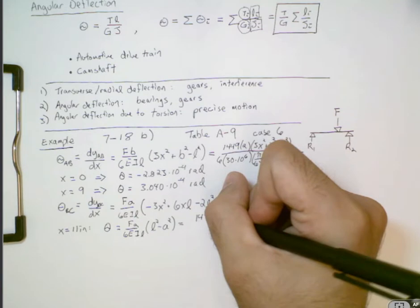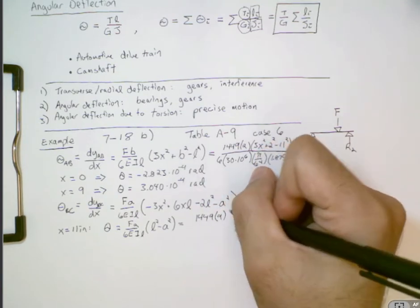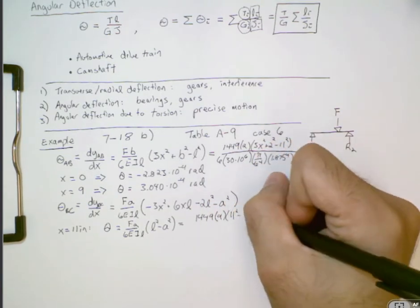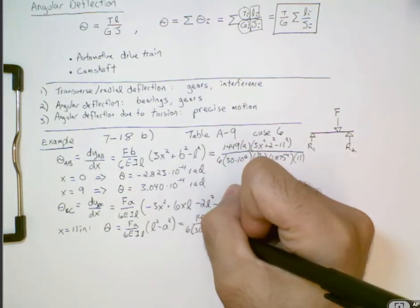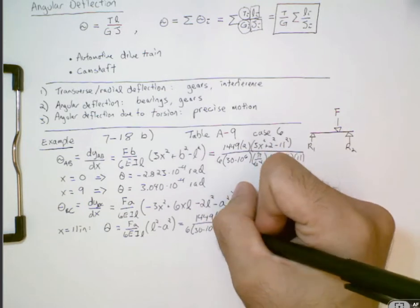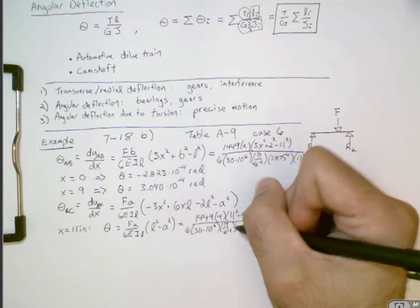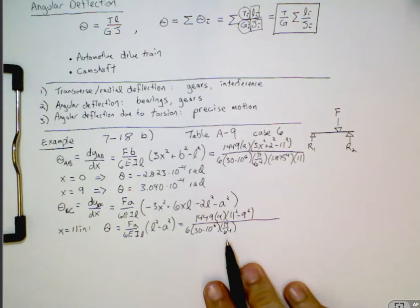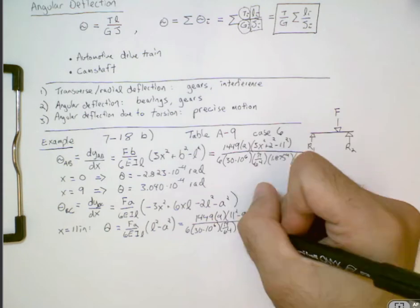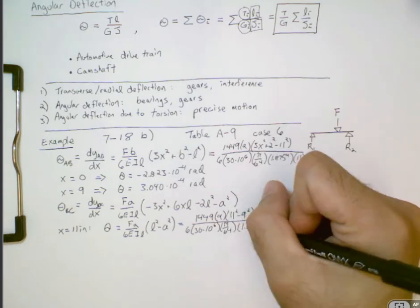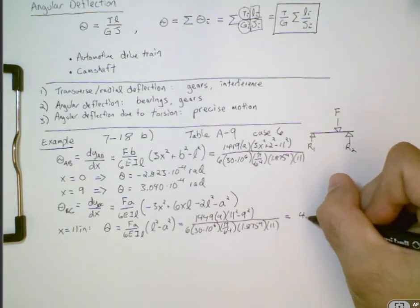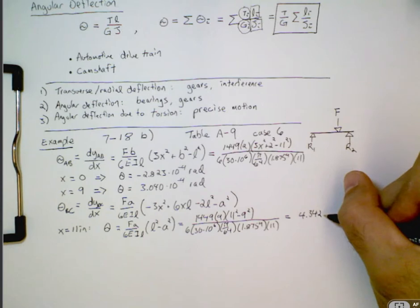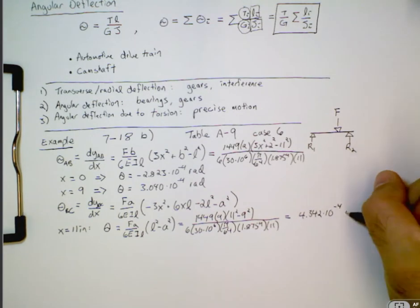Equals 1449 times 9 times 11 squared minus 9 squared, all divided by 6 times 30 times 10 to the sixth times pi over 64. And remember to look up the formula for the area moment of inertia to see where that came from. 1.875 to the power of 4 times 11. And that is 4.342 times 10 to the minus fourth radians.